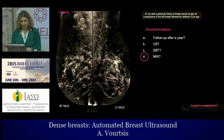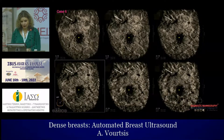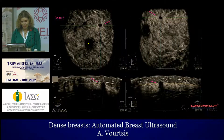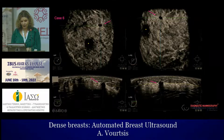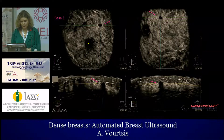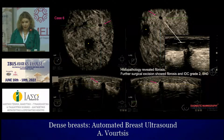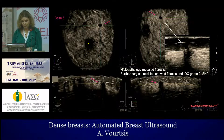We performed ABUS instead. In addition to the surgical scar, there is a speculated mass in the inner part of the same breast — not related to the post-operative changes. On the coronal and transverse planes of both the AP and oblique acquisitions, a suspicious mass with enhanced acoustic shadowing is visible. We performed core biopsy under ultrasound guidance, which showed fibrosis. However, further surgical excision was necessary, which showed fibrosis and invasive ductal cancer grade 2. The sentinel node was negative.